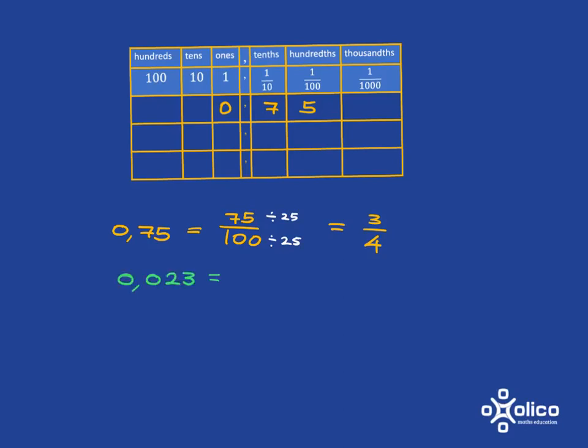If I look at 0.023, if I put it into my place value table, I see that I get as far as the thousandths. And so that tells me that what I'm dealing with is 23 over a thousand. And this one can't be simplified.